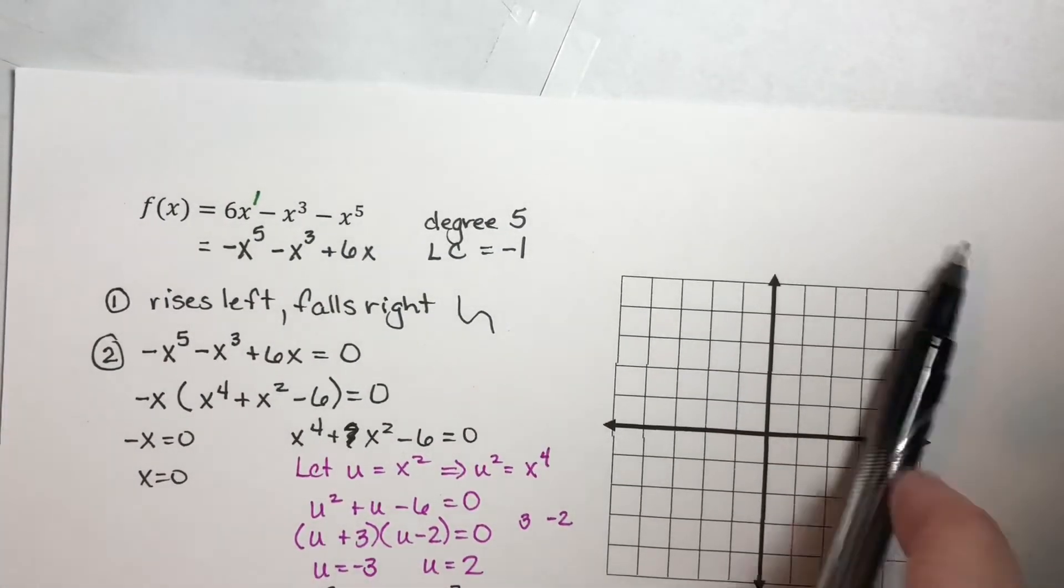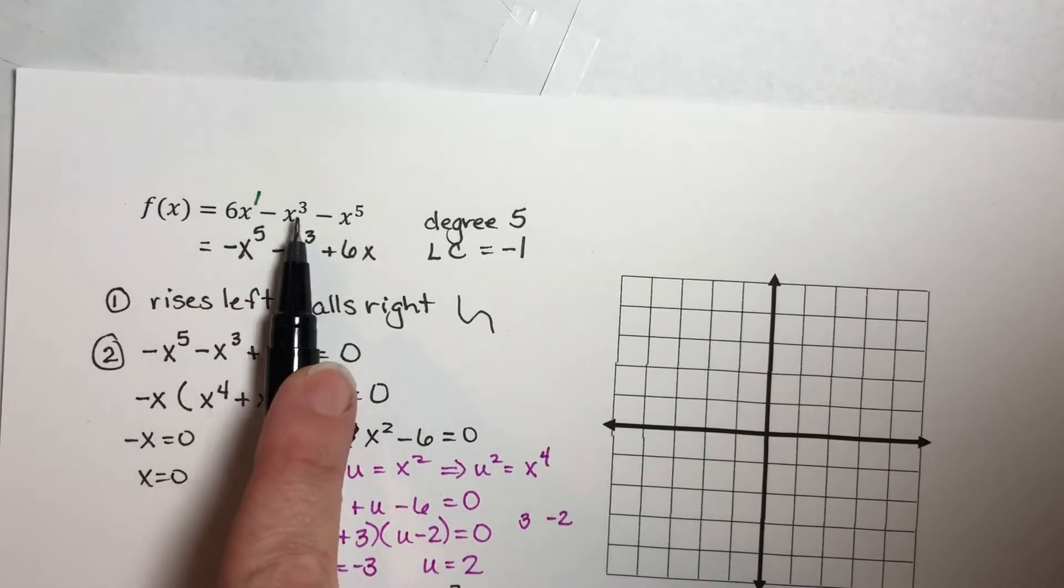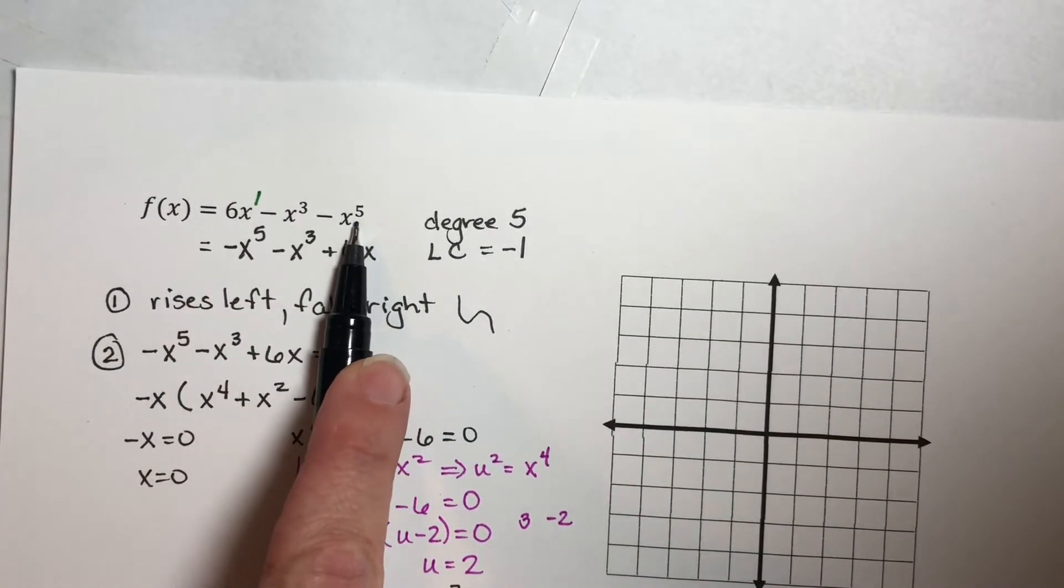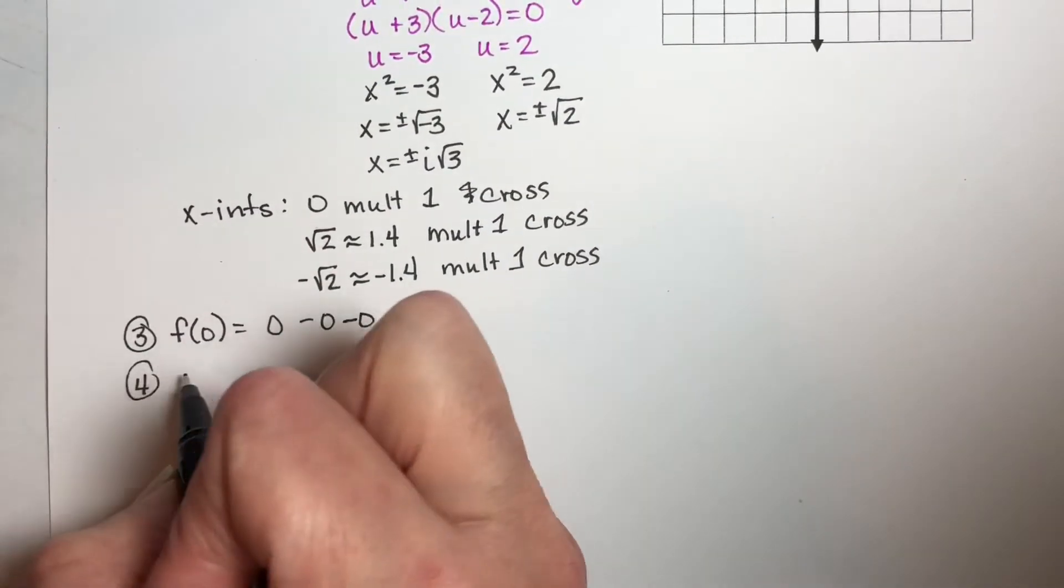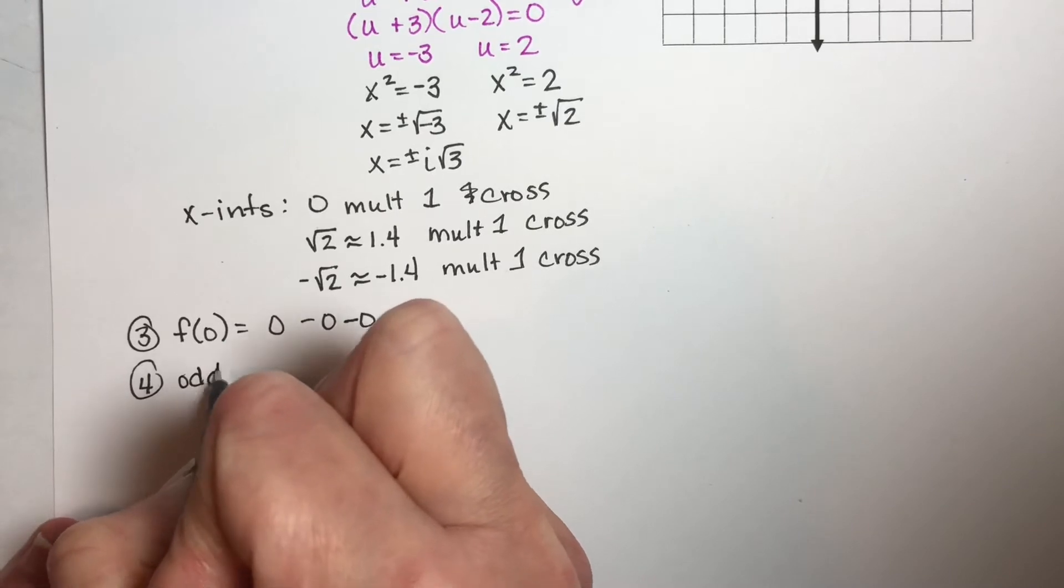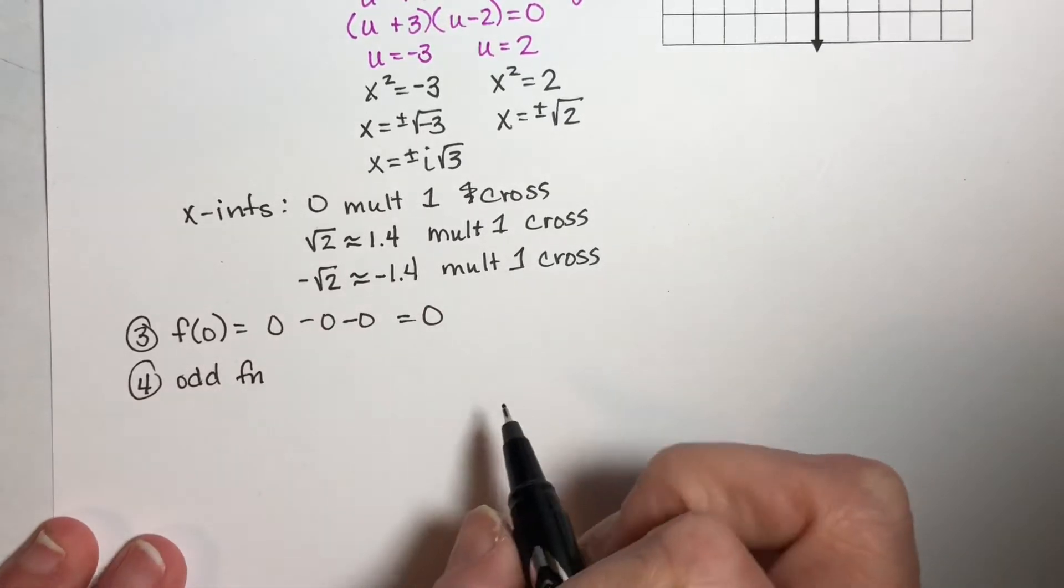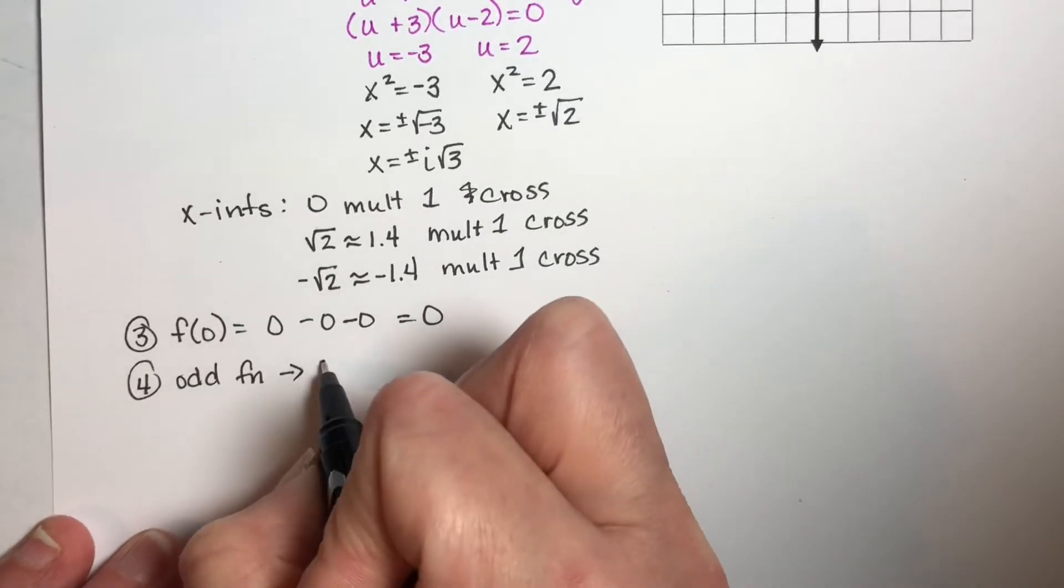So my exponents are one, three, and five. And since all of these are odd, we have an odd function here. And that means we have origin symmetry.